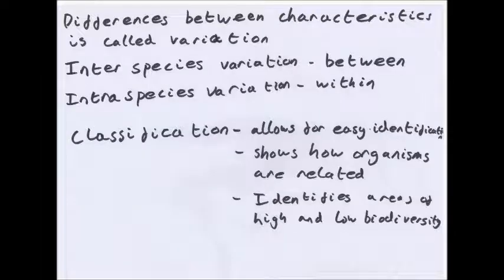Differences between characteristics is called variation. Interspecies variation is between different species — for example the differences in characteristics between humans and monkeys. Intraspecies variation is within a species — that's the differences between you and another human.